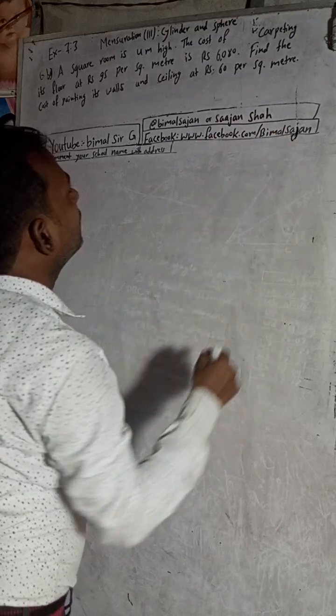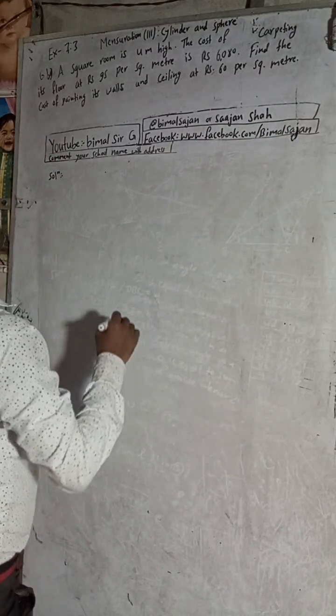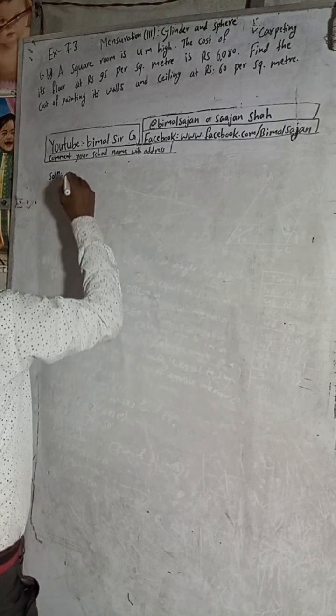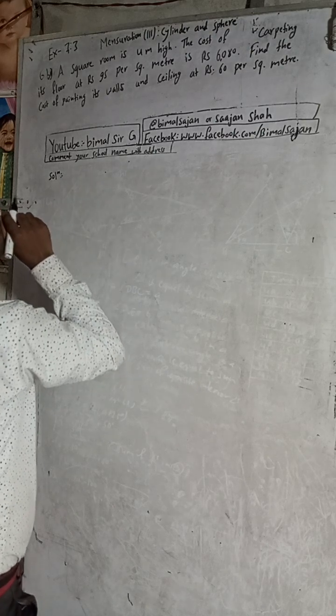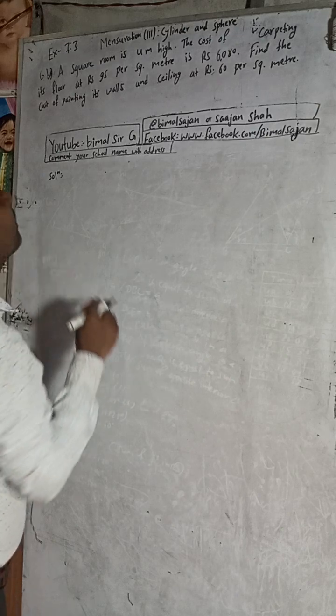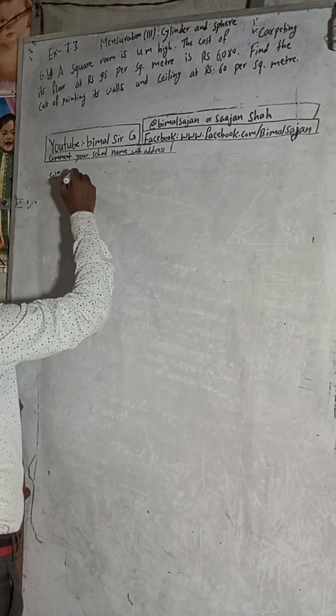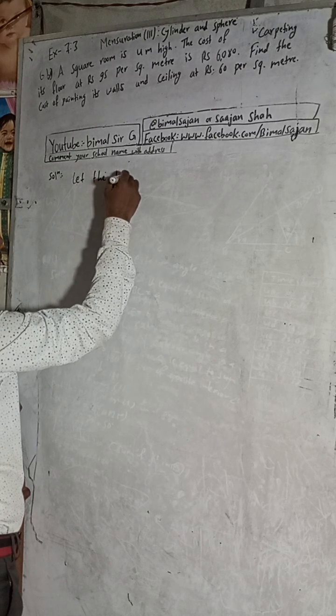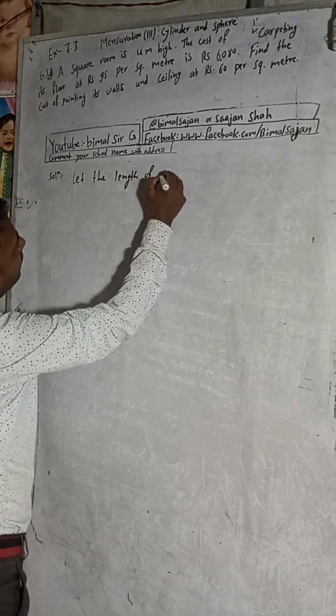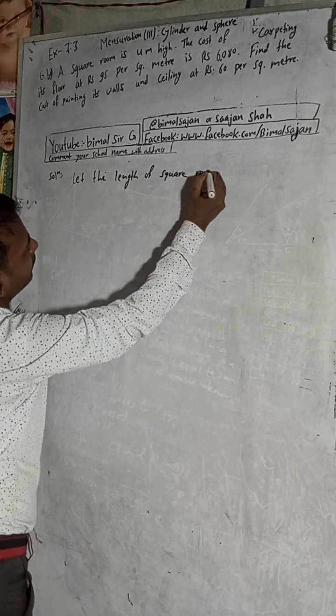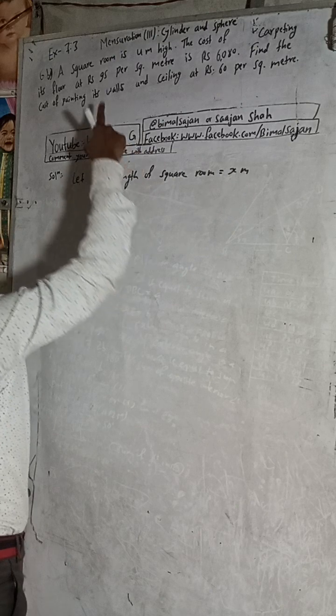Now let's start the solution. A square room is 4 meters high. The cost of carpeting the floor is Rs 6,080 at Rs 95 per square meter. Let the length of the square room be equal to x meters.